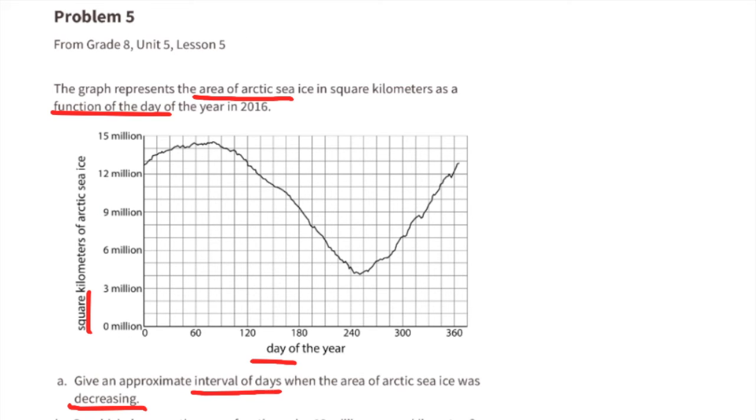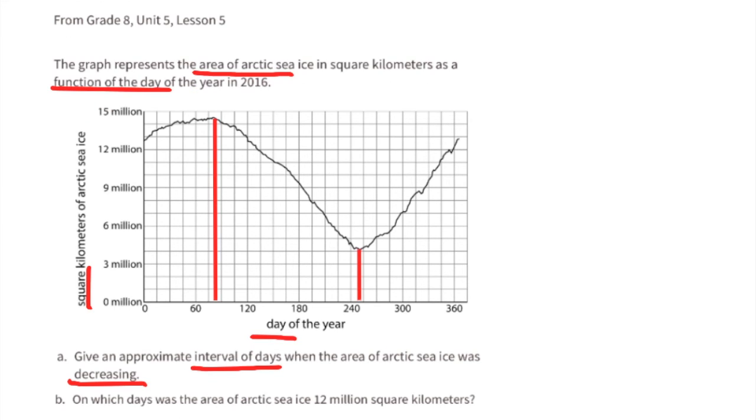Problem number 5, from 8th grade Unit 5 Lesson 5: The graph represents the area of Arctic sea ice in square kilometers as a function of the day of the year in 2016. Part A: Give an approximate interval of days when the area of Arctic sea ice was decreasing. According to the graph, the area of Arctic sea ice was decreasing from about day 77 to day 253.